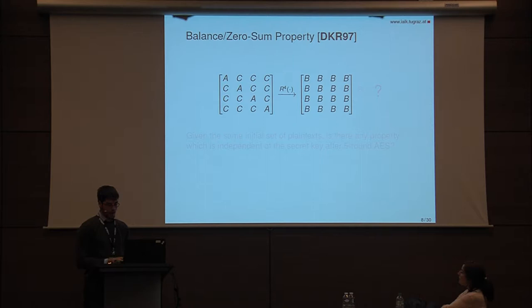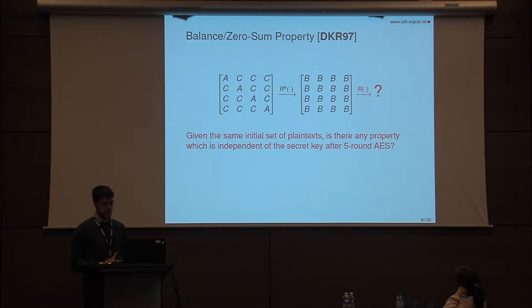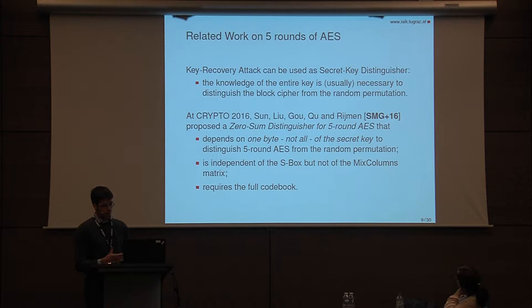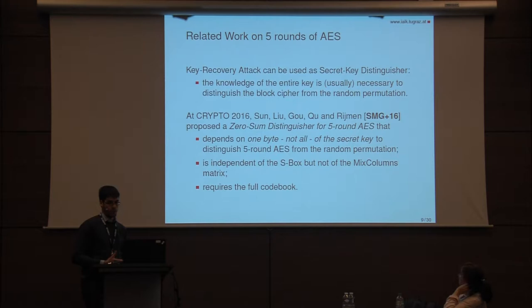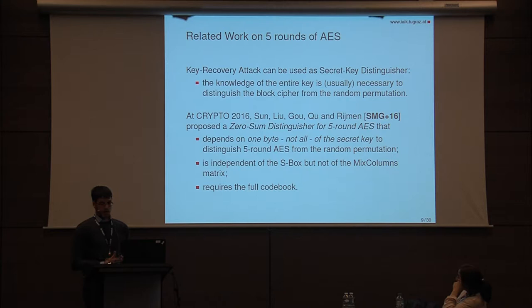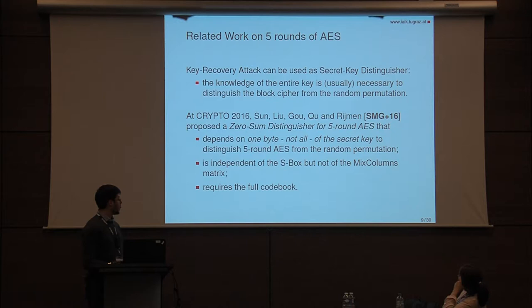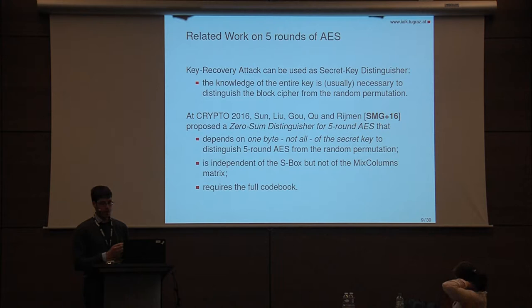The question is: if we start with the same set of plaintexts, is there any property independent of the secret key after five rounds of AES? Before presenting our property, I briefly recall the state of the working literature. Any key recovery attack can be used as a secret key distinguisher, but this is obviously not independent of the secret key, because part of the key or even the entire key must be known to distinguish a block cipher from the random permutation. The most recent result about five rounds of AES was proposed at CRYPTO last year. It is a zero-sum distinguisher that depends on only one byte of the key, is independent of the S-Box but not of the MixColumns matrix, exploiting the fact that two elements of each column of the MixColumns matrix are identical. Finally, it requires the full codebook.